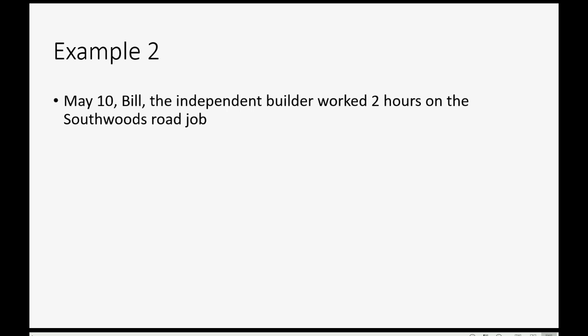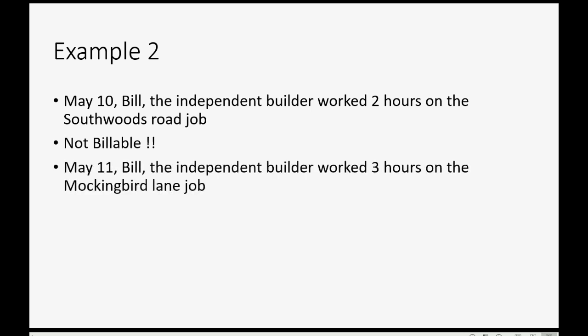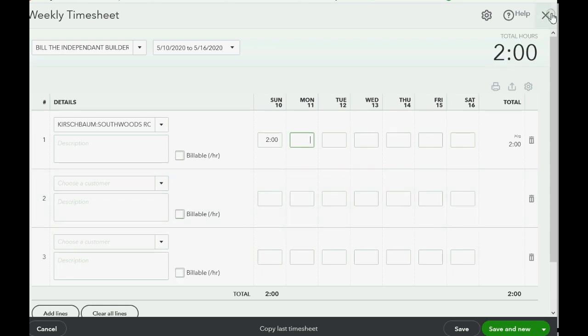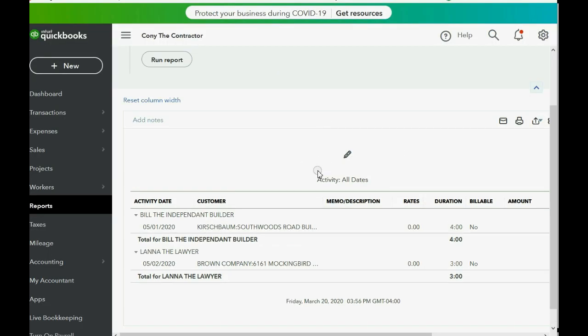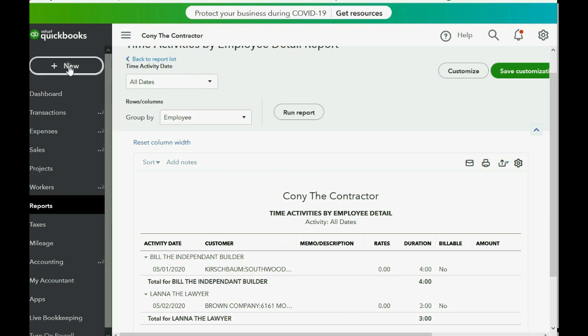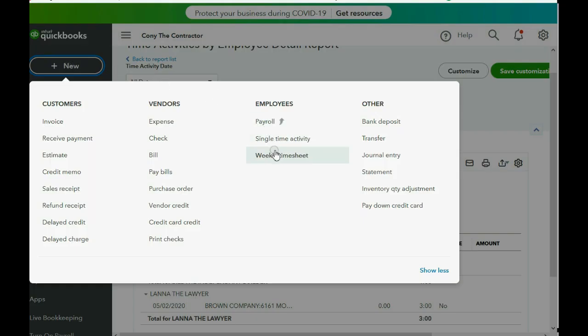For example: on May 10th, Bill the Independent Builder worked two hours on the South Woods Road job — not billable. On May 11th, Bill worked three hours on the Mockingbird Lane job — also not billable. We can make a weekly timesheet just for Bill. To record this, click New in the top left and go to Weekly Timesheet.